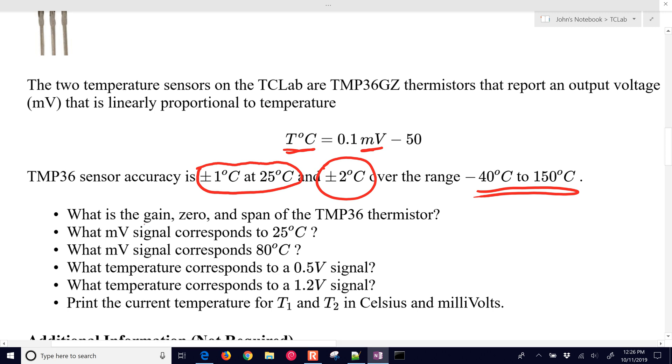First of all, let's ask the question, what is the gain, zero, and span of the TMP-36? Well, the zero is going to be the lowest temperature that it can read. So, there is our zero. Our span is going to be between negative 40 to 150, or we have a total range of 190 degrees Celsius that we can read.